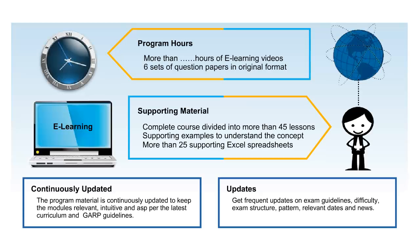The Simply Learn tutorial for the Part One exam consists of more than 45 lessons to assist in exam preparation. The lessons are divided based on readings prescribed by the GARP FRM committee, with each reading covered in a separate lesson. Each lesson will comprehensively prepare you for that particular reading. Lessons are also supported by examples, and Excel spreadsheets are designed based on simple examples to explain important principles and concepts, making learning much easier.